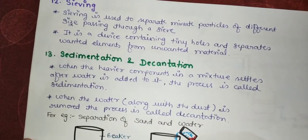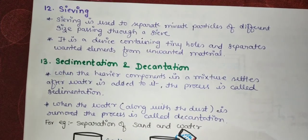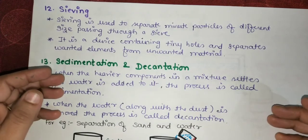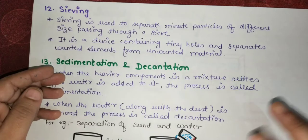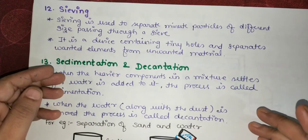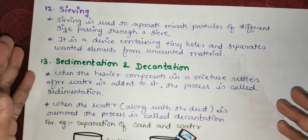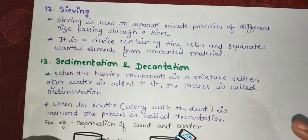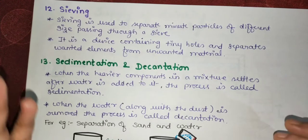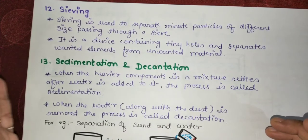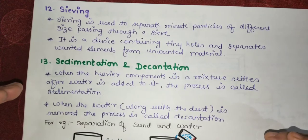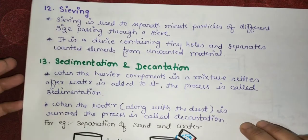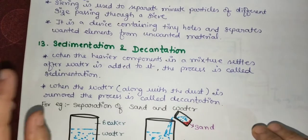Next is sieving, a technique to separate particles of different sizes. A sieve is a device containing tiny holes that separates unwanted material of larger size from the wanted finer elements by passing the mixture through it.